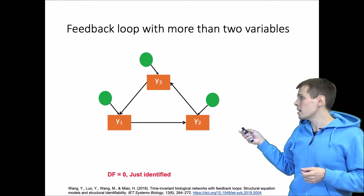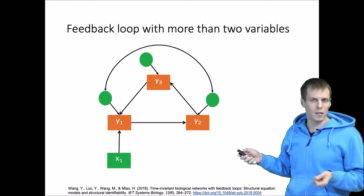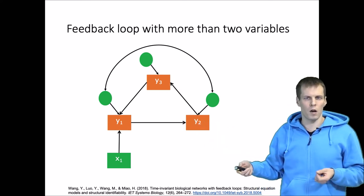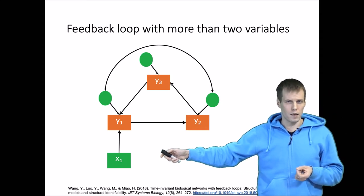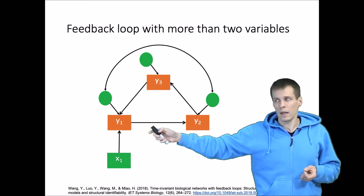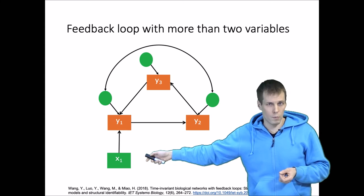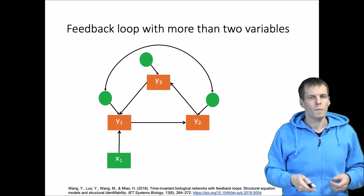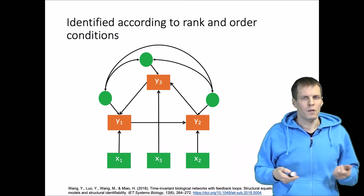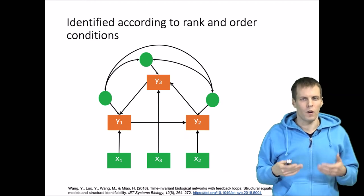What if we make this more complicated by adding correlated disturbances? If there is a correlated error term between y1 and y2, we can identify the model by adding x1 as an instrument. When two error terms are correlated, y1 is endogenous with respect to y2, and having an instrumental variable helps identify the model. If we have all error correlations free, then adding three instruments is sufficient to identify the model.